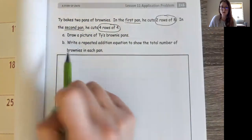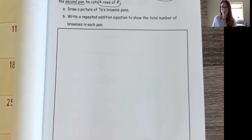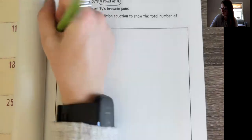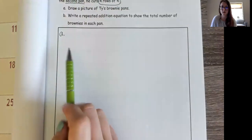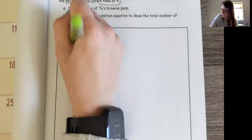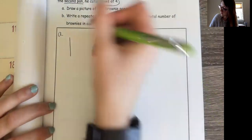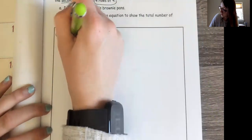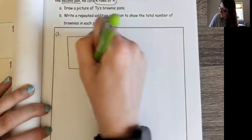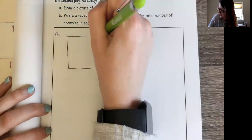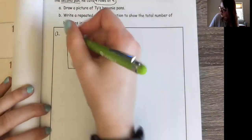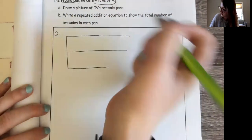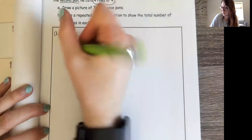Now I'm going to draw my pictures of both brownie pans. I'm going to label my paper so I know which part I'm doing first — so A. For the first brownie pan, I know he has two rows of eight, so I'm going to draw two rows and eight brownies in each row.